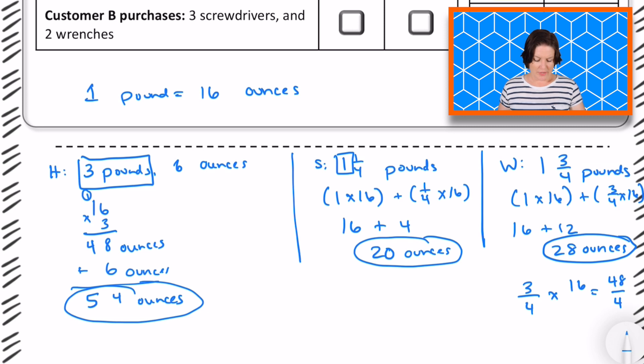Okay. So the hammer is 54 ounces, the screwdriver is 20 ounces, and the wrench can be converted into 28 ounces. So now what do we do? Yeah, we need to combine all those together and see if it's less than or greater than what? 100 ounces. So let me add that up.